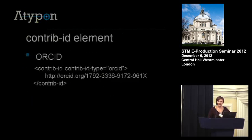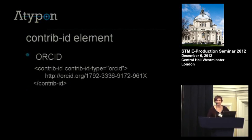The second big thing in JATS 1.0 is the contrib ID element — support for tagging ORCID identifiers, or whatever your author identifier of choice is. I think this is something that's going to become particularly important for all publishers over the next 24 months.